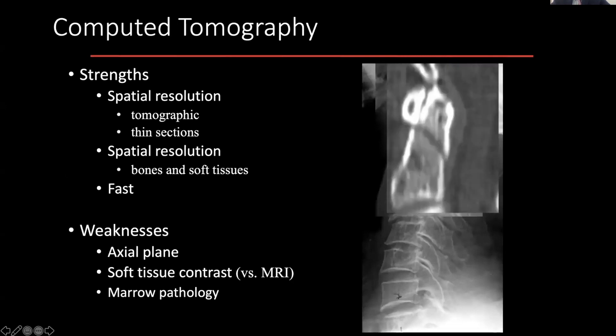Moving to CT — starting off from plain film, you now get a tomographic representation across a single plane with multiple slices. This is a high spatial resolution modality. Spatial resolution is a term we use in radiology to say that you're able to depict very small structures, and you're able to see bone particularly well, especially cortical bone.